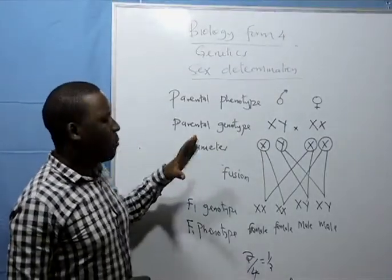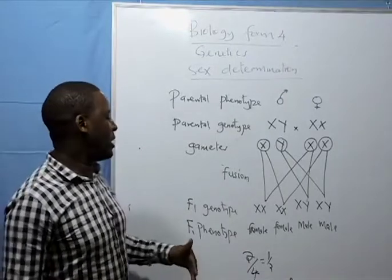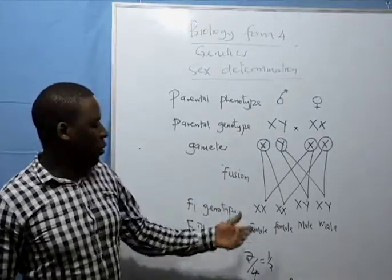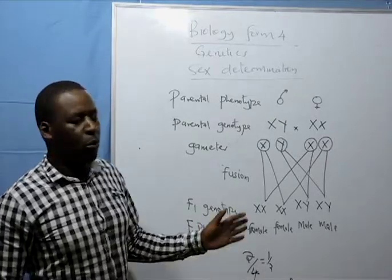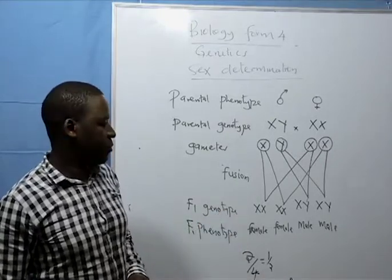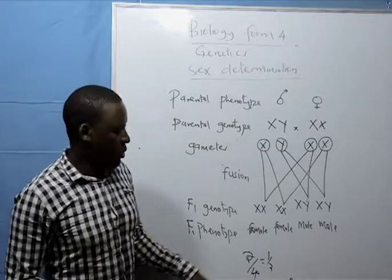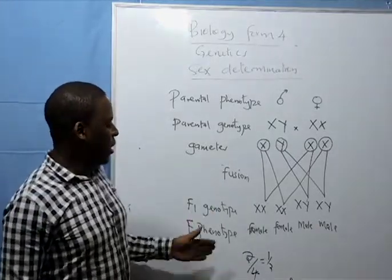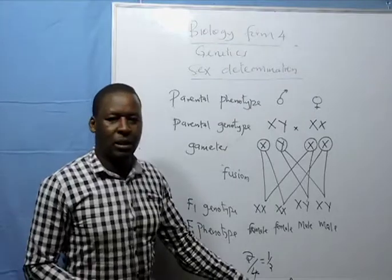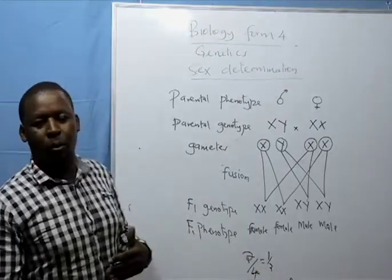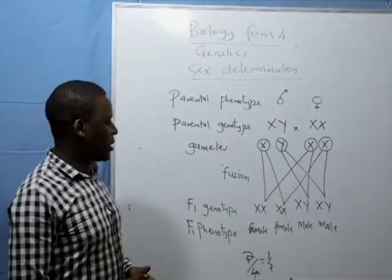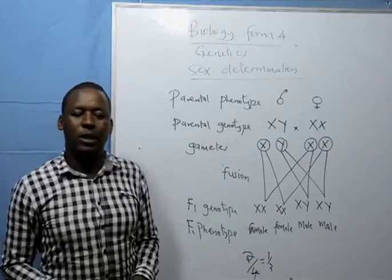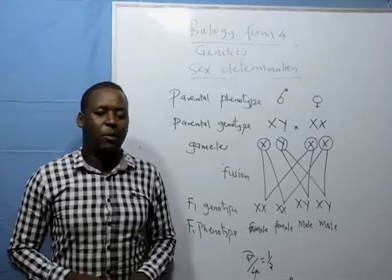But practically, you will find in a family there are more male children or more female children. Those are things we shall discuss in the next lesson. Why is it possible that though the probability is 50%, some families have more boys or more girls? Thank you for listening. I wish to see you in the next lesson.